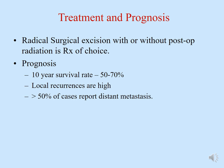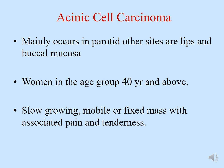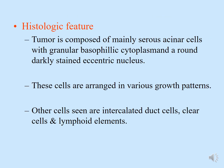The third malignant salivary gland tumor is acinic cell carcinoma, which mainly occurs in the parotid. Other affected sites are the lip and buccal mucosa. Women aged 40 years and above are generally more affected. The lesion is a slow-growing mobile or fixed mass with associated pain and numbness. Histologically, the tumor is composed mainly of serous acinic cells with granular basophilic cytoplasm and a round, darkly stained eccentric nucleus.